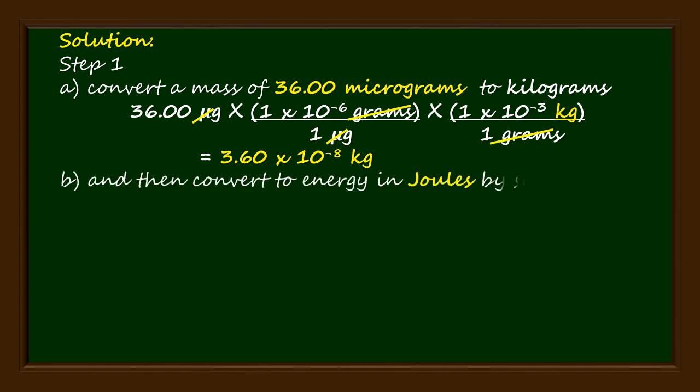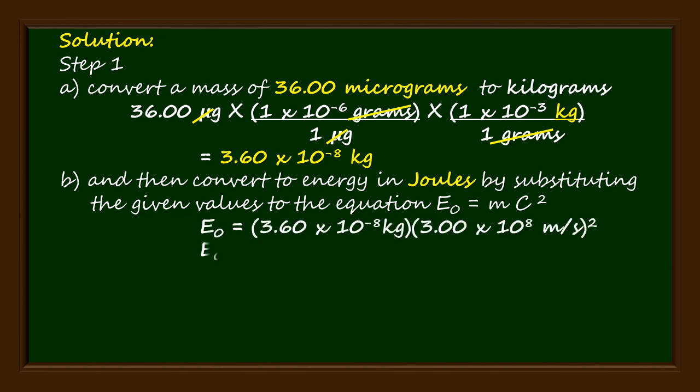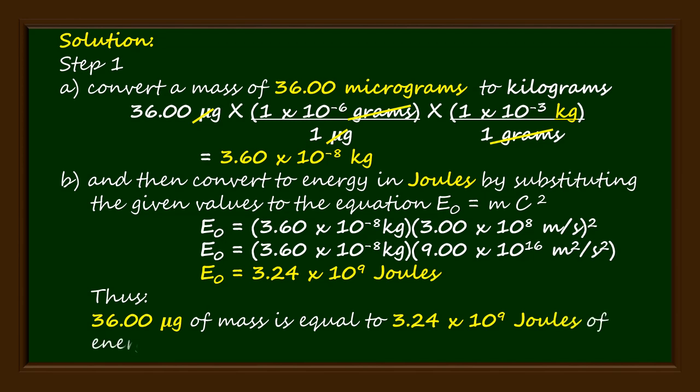And then convert to energy in joules by substituting the given values to the equation E₀ equals mc squared. Thus, 36.00 micrograms of mass is equal to 3.24 times 10 to the 9 joules of energy.